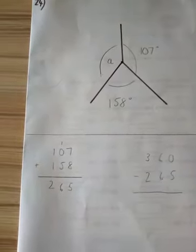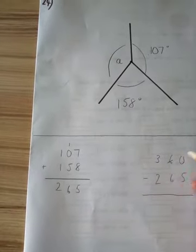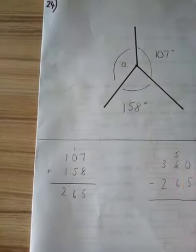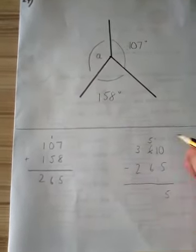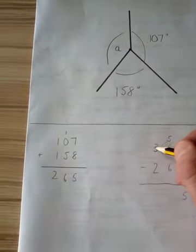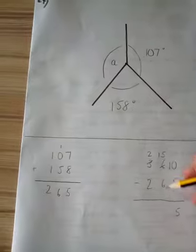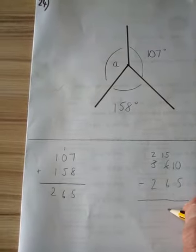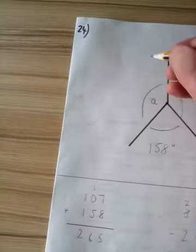0 subtract 5: well, we can't do that without borrowing, so let's exchange that in the tens column for the units. 10 take away 5 is 5. 5 take away 6, again we can't do without borrowing, so we'll turn that into 2. We know how to do this: 15 take away 6 is 9. 2 take away 2, 0. So the answer to that question, angle A is 95 degrees.